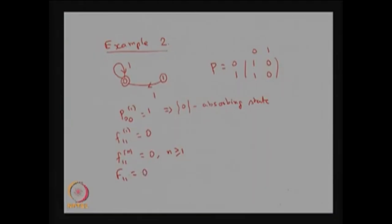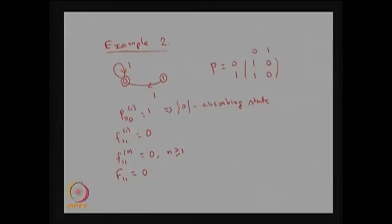Recall that the way we classify a state as recurrent or transient: F is equal to 1 means recurrent, and F less than 1 means transient — and that includes F equal to 0. Our interest is whether the system returns to the same state with probability 1. If F equals 1, it is recurrent; all other cases are transient. Here, F(1,1) = 0 implies state 1 is a transient state.